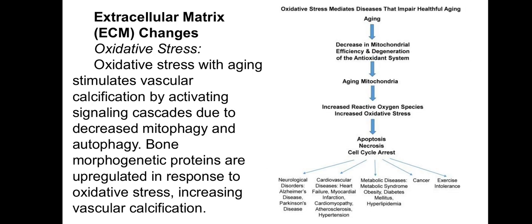Oxidative stress with aging stimulates vascular calcification by activating signaling cascades due to decreased mitophagy and autophagy. Bone morphogenic proteins are upregulated in response to oxidative stress, increasing vascular calcification. A schematic presentation shows what is happening and what the consequences are.